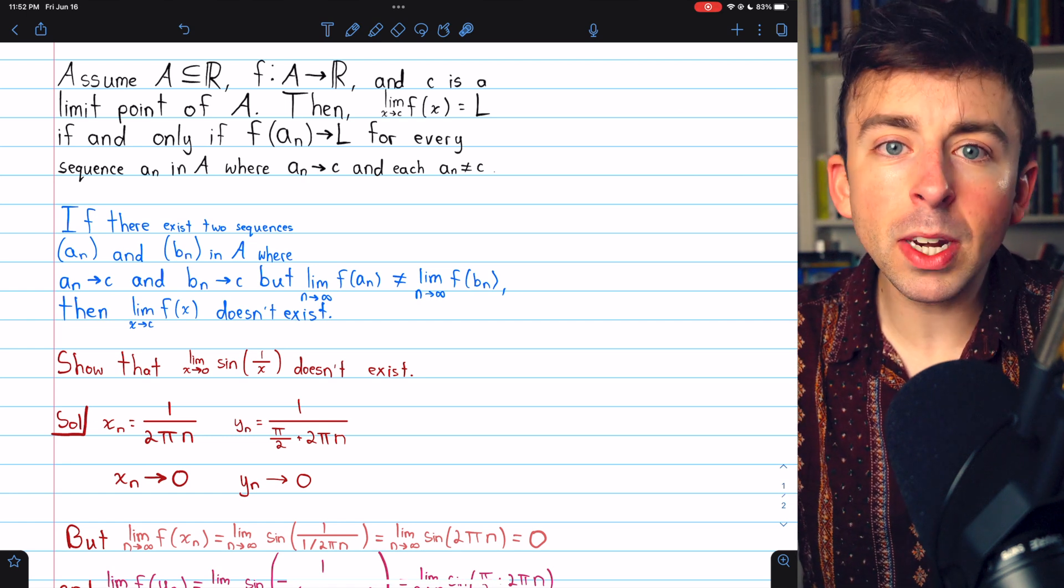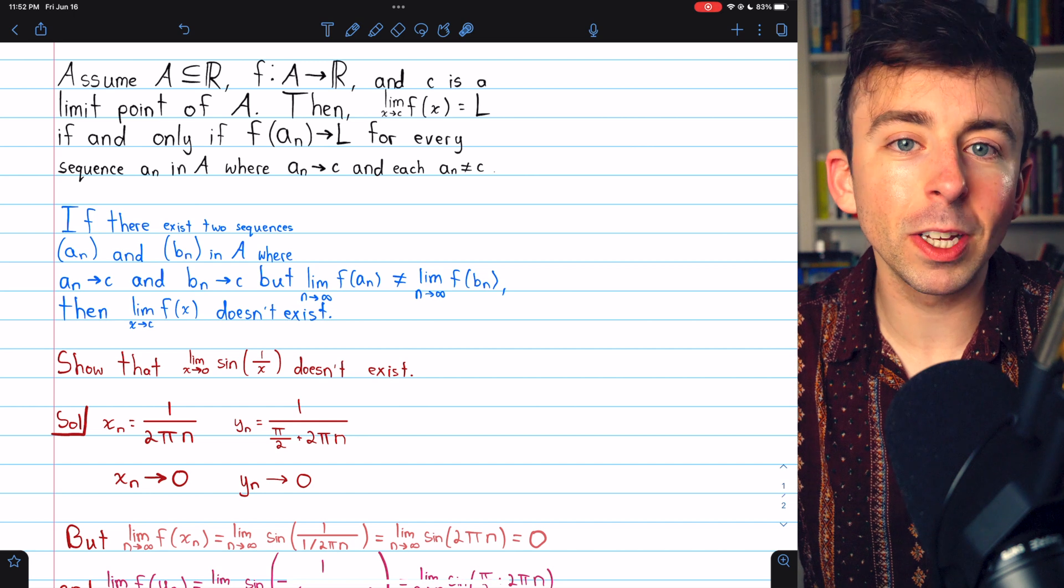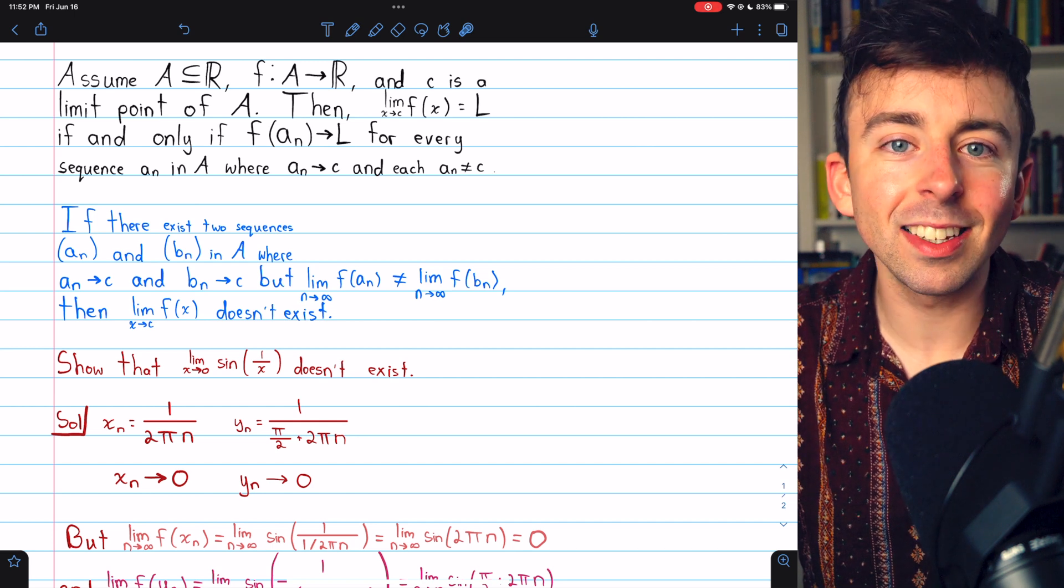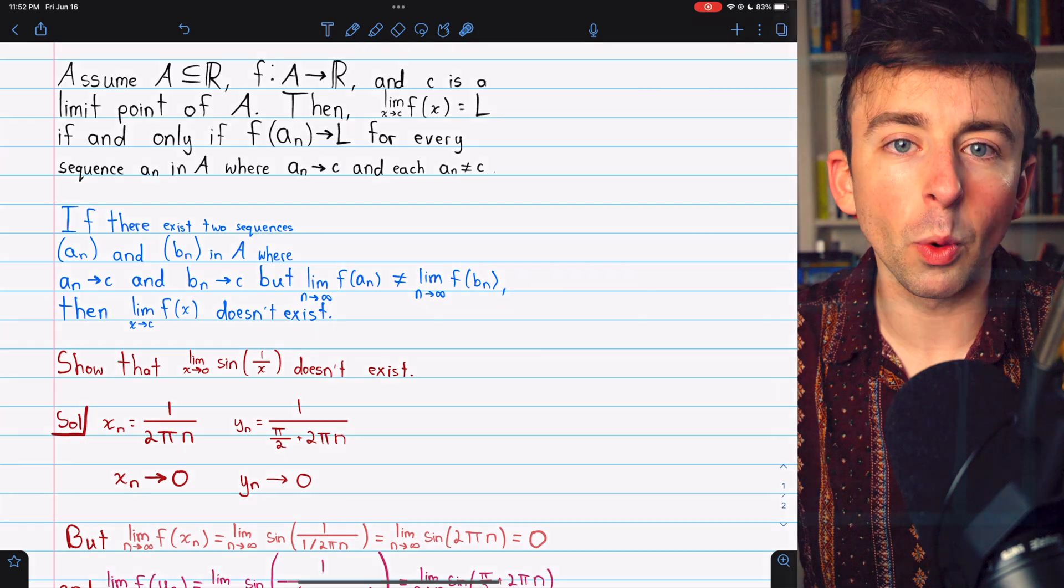And that's how you can use this handy sequential criterion to show that the limit of a function doesn't exist. I hope that was helpful. Let me know in the comments if you have any questions, and be sure to check out my Real Analysis course and Real Analysis Exercises playlists in the description. Thanks for watching.